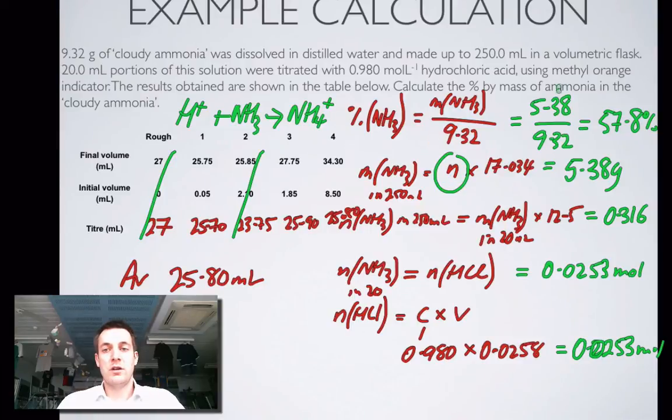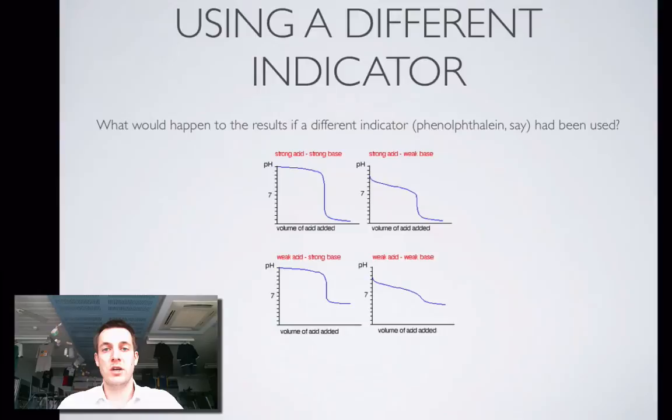Let's just have a look at this thing here. We've used methyl orange indicator. So what we're going to do now in this next slide is we're going to see how would the results have changed if we'd used a different indicator.